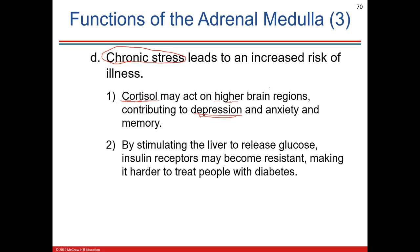Depression may be linked to lack of serotonin, and anxiety to excess glutamate or decreased GABA. Chronic stress can impair memory and learning. Over time, the release of these stress hormones — really because of chronic inflammation — could eventually lead to dementia, which is loss of memory. These are neuropsychological consequences with a clear biological mechanism.